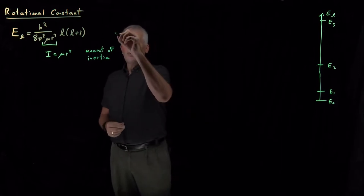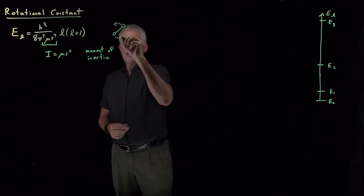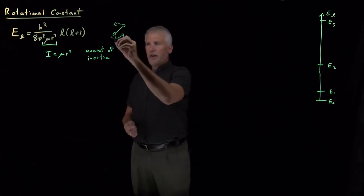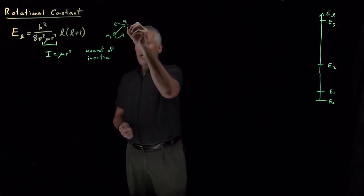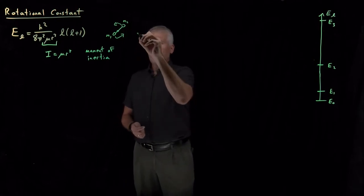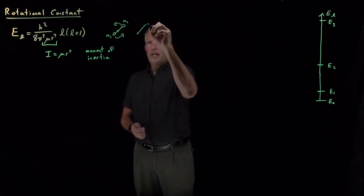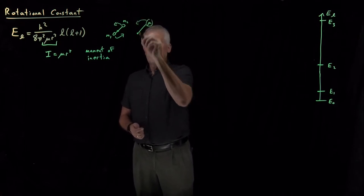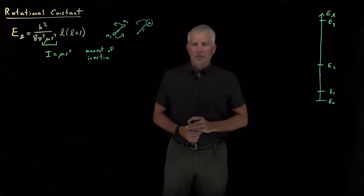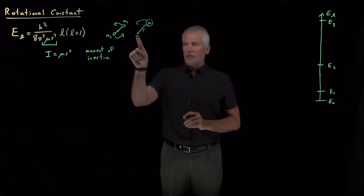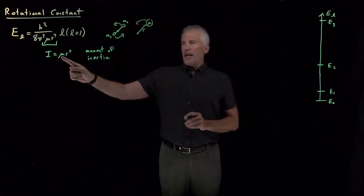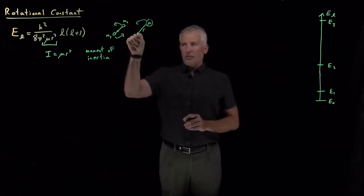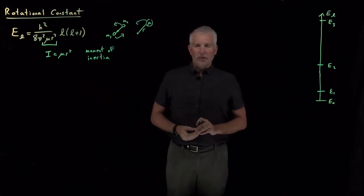For this rotating diatomic molecule that we're treating as a rigid rotor, instead of having atoms with masses m1 and m2 spinning around some center of mass, we've chosen to represent those as an object of mass mu rotating at some distance r — the bond length of the molecule — away from the center of mass. So the mass of this rotating object is mu, the distance away from the center of rotation is r, and mu r squared gives us the moment of inertia.